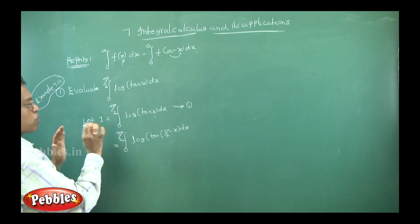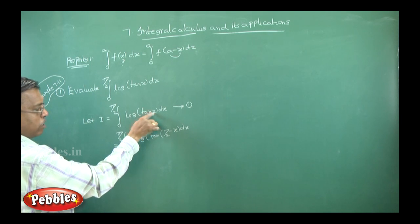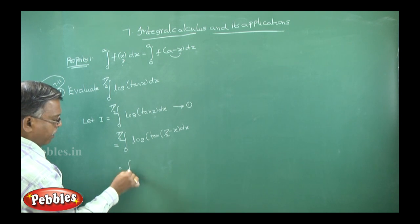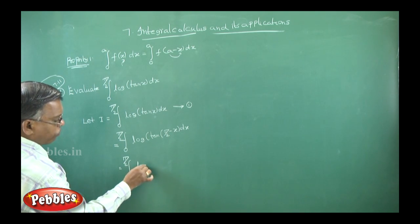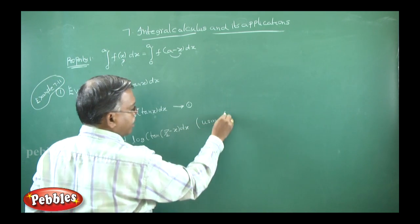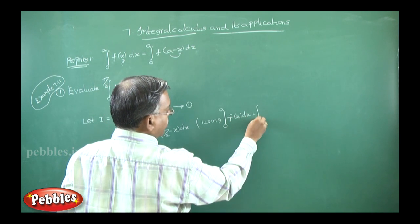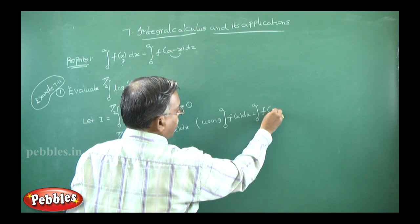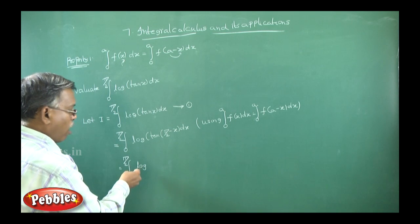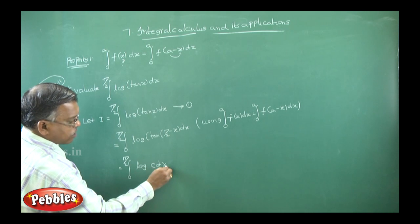Here a minus x means what? In this problem, the upper limit a is π/2. So we replace x by a minus x, which is π/2 minus x. Now, using the property — integral from 0 to a of f(x) dx equals integral from 0 to a of f(a minus x) dx — we get: what is tan(90° minus x)? It is cot x. So the second integral becomes the integral from 0 to π/2 of log(cot x) dx.